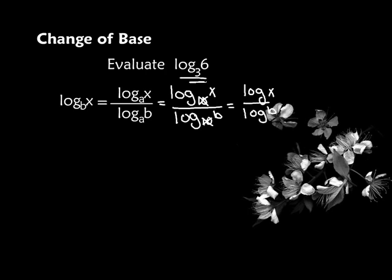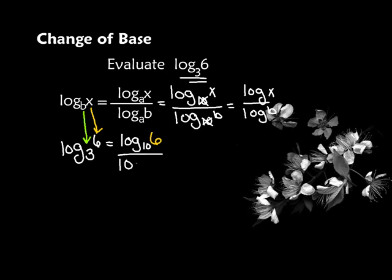Let's see how that works when we try to evaluate log base 3 of 6. I would write it right under my formula — log base 3 of 6. So now I can see that b is 3 and x is 6. Let's put that into our change of base formula. It's base 10 of 6 divided by log base 10 of 3. Since the 10 is assumed, I can simply write log of 6 over log of 3.